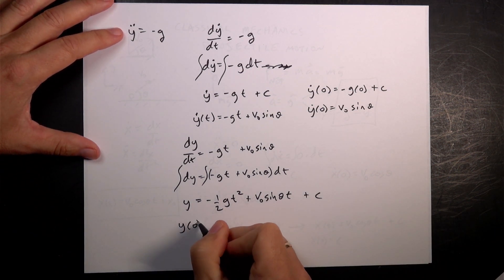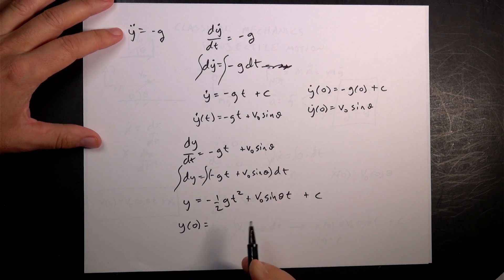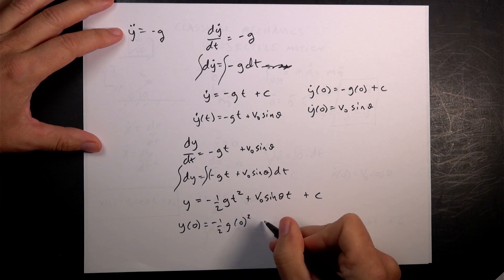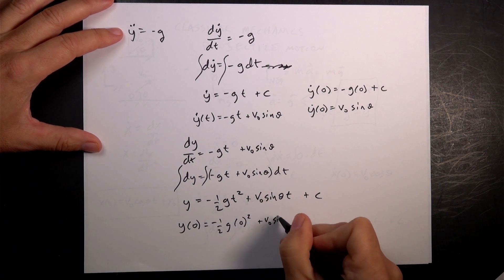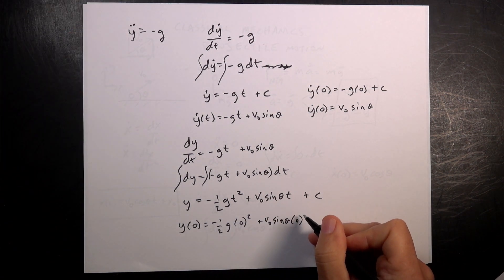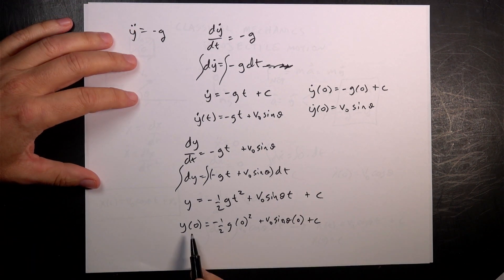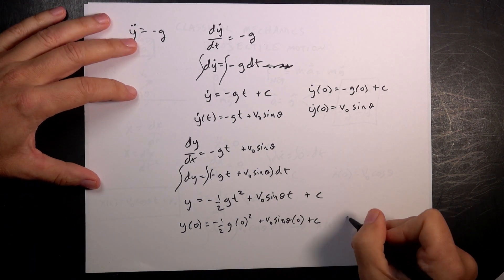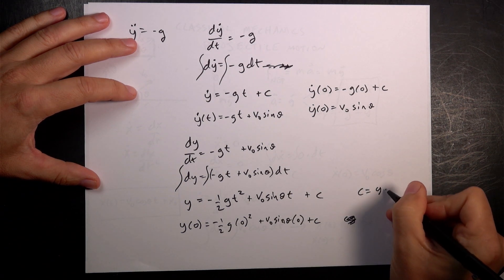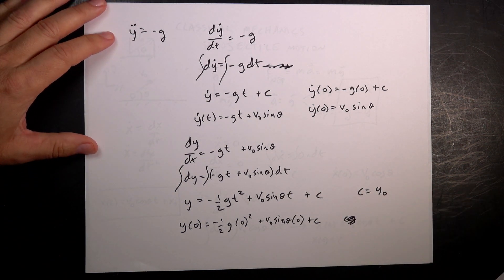y at time t equals zero: if I put in t equals zero, I get negative one half g times zero squared plus v zero sine theta times zero plus c. So c is going to be y zero, the initial y position.